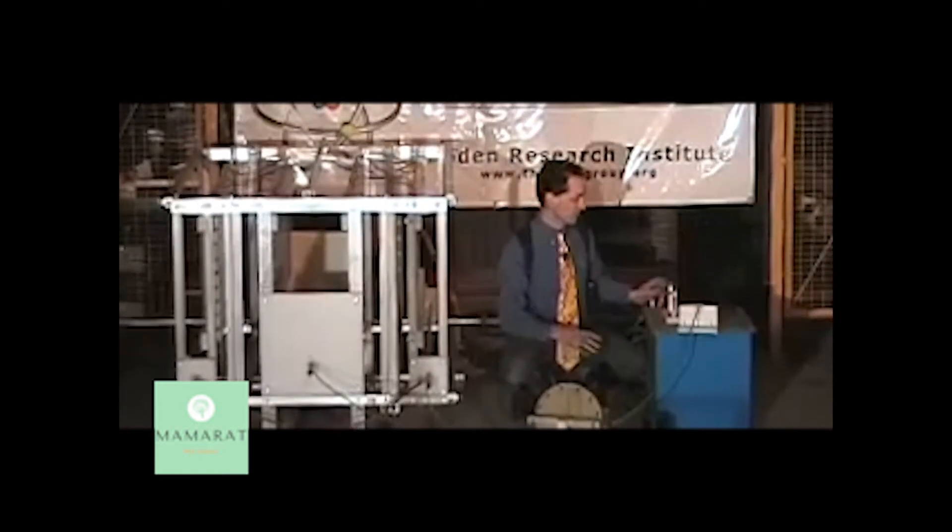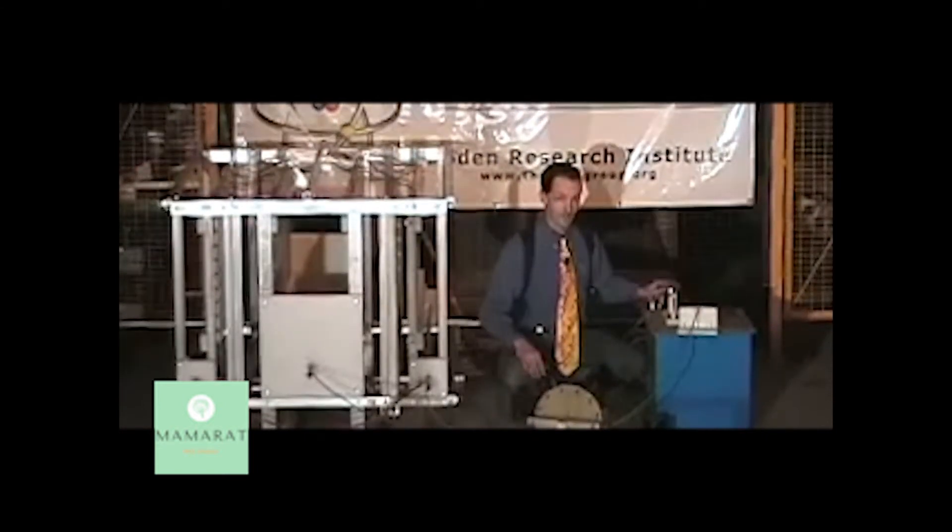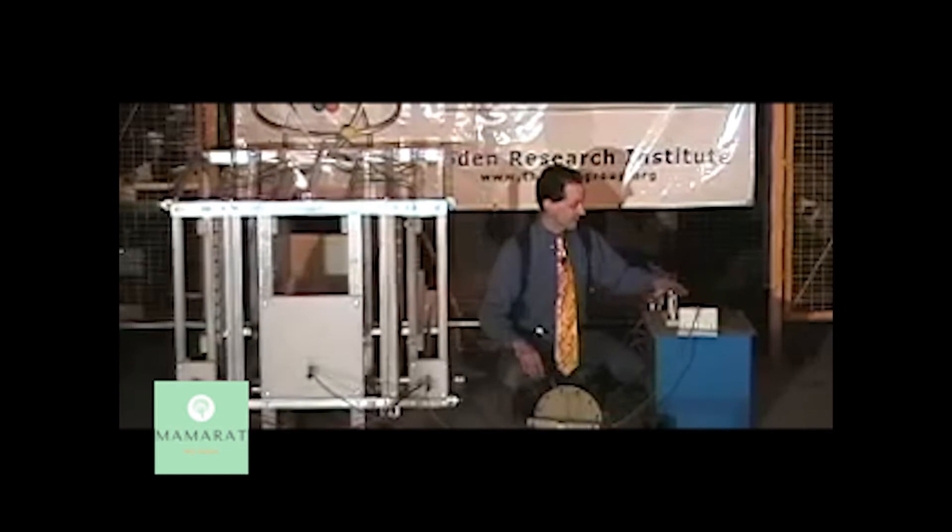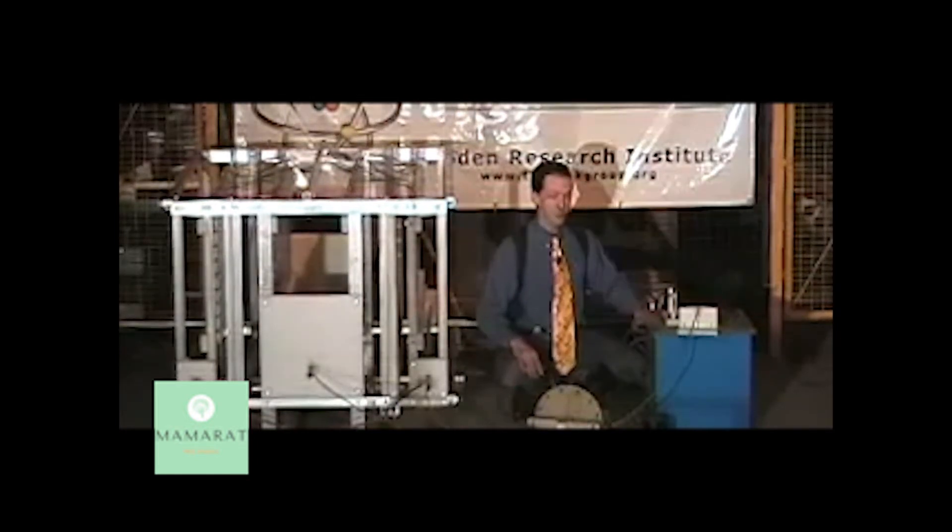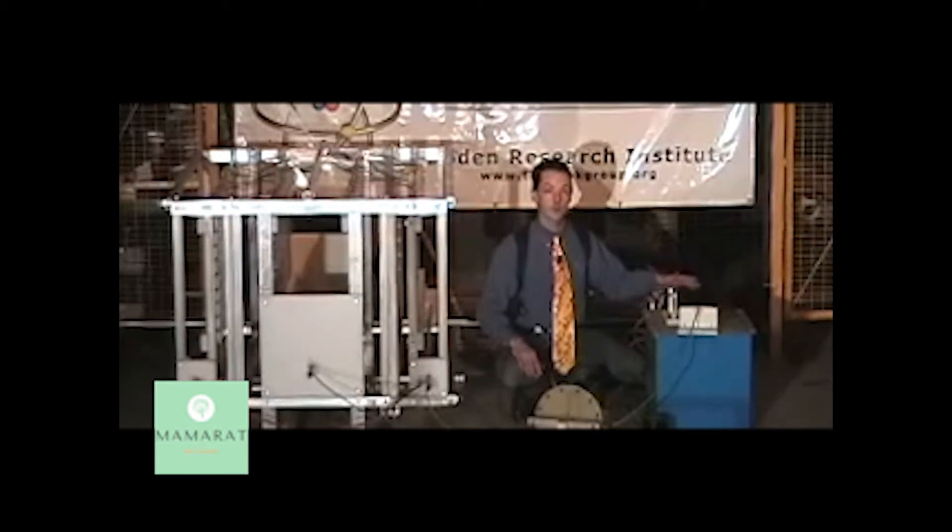To protect the transformer we have a safety gap. The purpose of the safety gap is that if any voltage across the system exceeds what the transformer is rated for, this grounds everything out. It's a voltage controlled switch. At about 16,000 volts this fires and dumps everything to ground. This protects the transformer, capacitors, and the entire rest of the system.